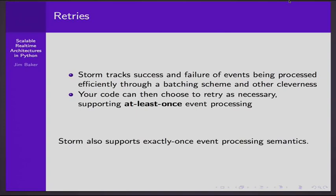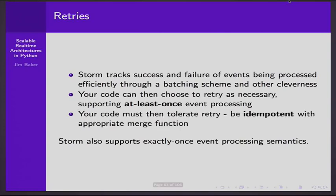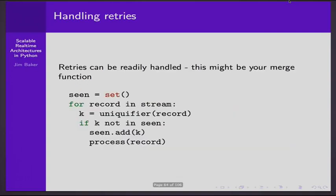What does retry handling look like? Here's the first Python code. It's simple: if you've already seen that record, you can ignore it; otherwise process it. If you retry this computation, and you haven't seen it in the context of actually being successful, then you do the retry. That's essentially a merge function and it can be that simple, but it depends on the nature of your problem.